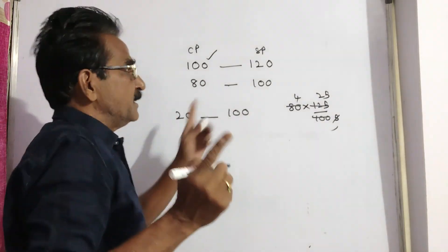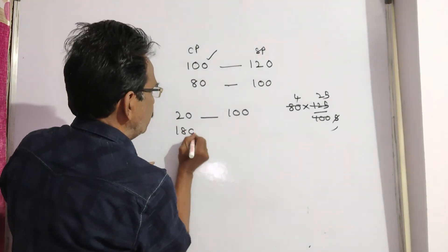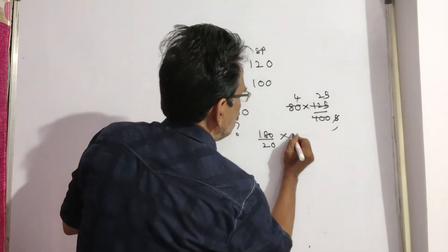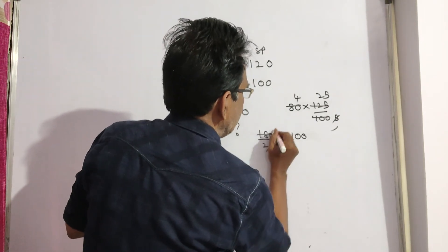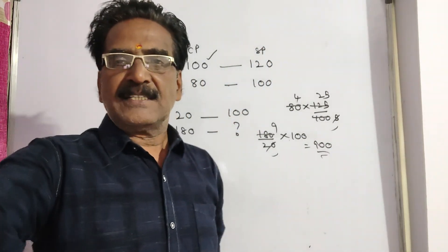So if 180 rupees less, then the cost price will be 180 by 20 into 100, which is 9 into 100, giving us 900 as your answer. Thank you, friends.